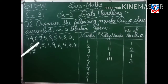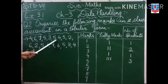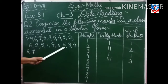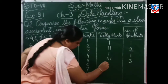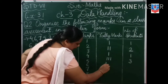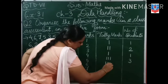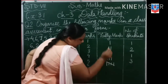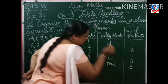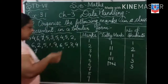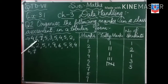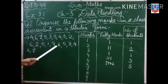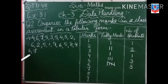Next is five. See here: one, two, three, four, five — five students got five marks. Then six: one, two, three, four — four students got six marks.